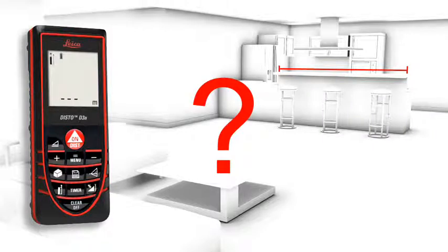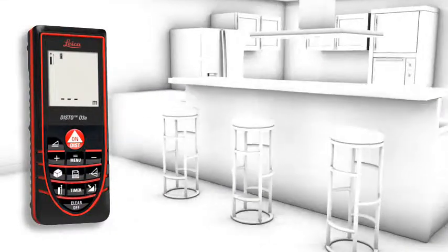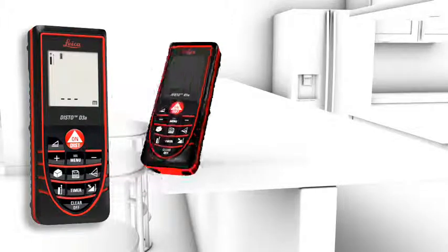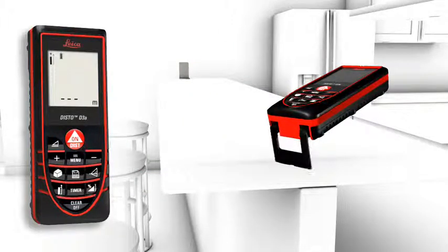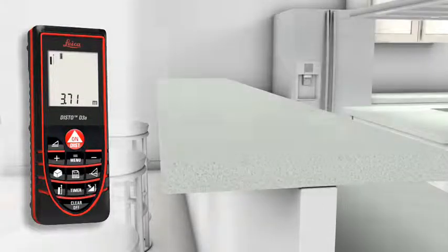Measurements on a non-reflective surface, example given a countertop in a kitchen, can be done simply and accurately in combination with the target plate. Accurate measurements out of corners, slots, or from edges with the multi-functional end piece of the Leica DISTO D3a. You are prepared for all measuring situations. The automatic end piece helps you avoid expensive measuring errors.